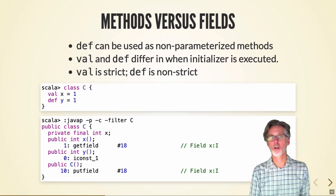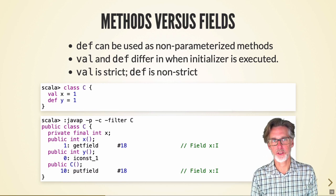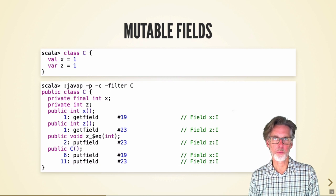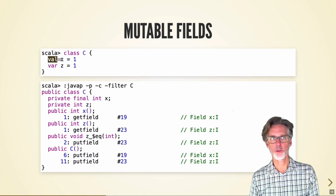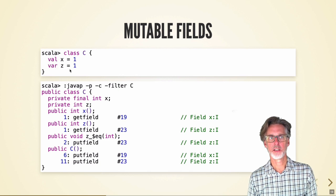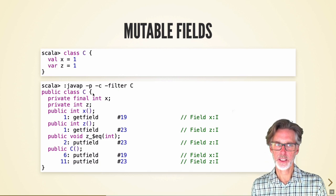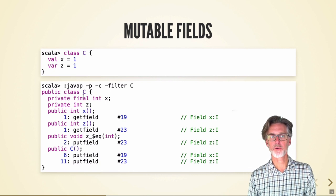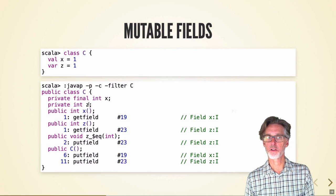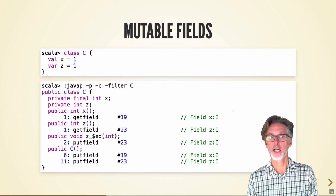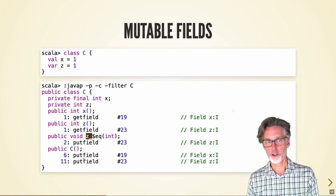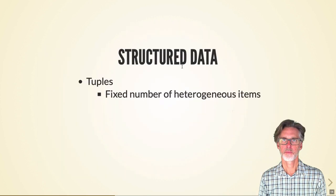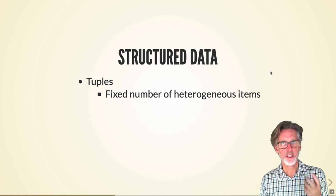The fact that definitions are not strict is significant — it's why we can write them recursively. Looking at how mutable fields are compiled: here I have immutable x and mutable z. The compiler produces fields for both — x is final and z is not — and we have accessors for both, but a mutator only for z. Both x and z are initialized in the constructor.